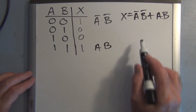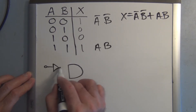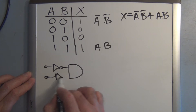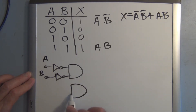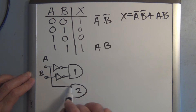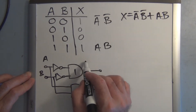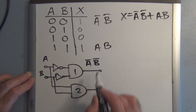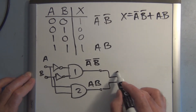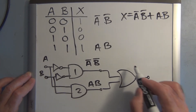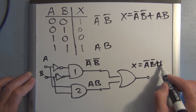The logic circuit representing this output expression uses two AND gates. In the first AND gate, inputs A and B are both inverted before going into the gate. In the second AND gate, inputs A and B go directly in without being inverted. The outputs A-not-B-not and A-B then feed into an OR gate, giving output X equal to A-not-B-not OR A-B.